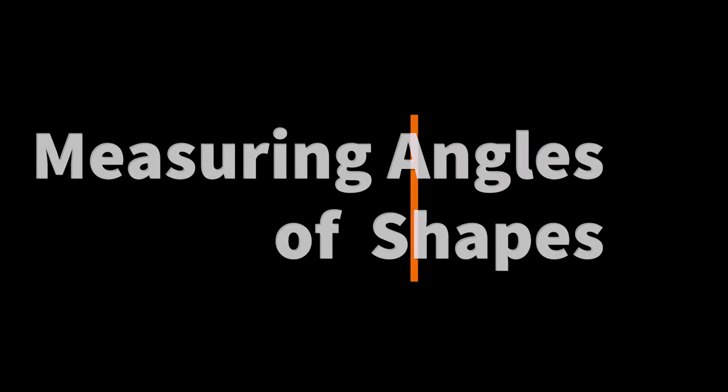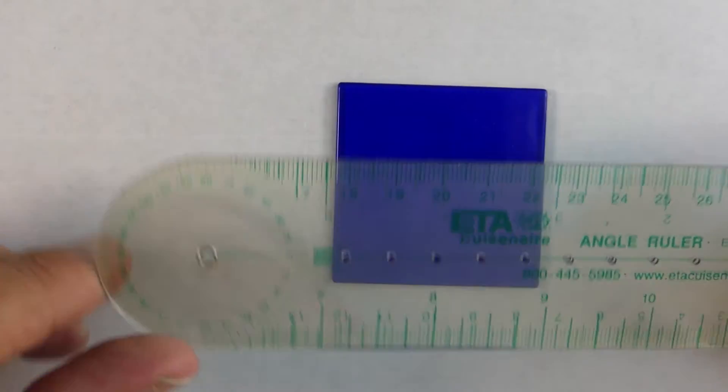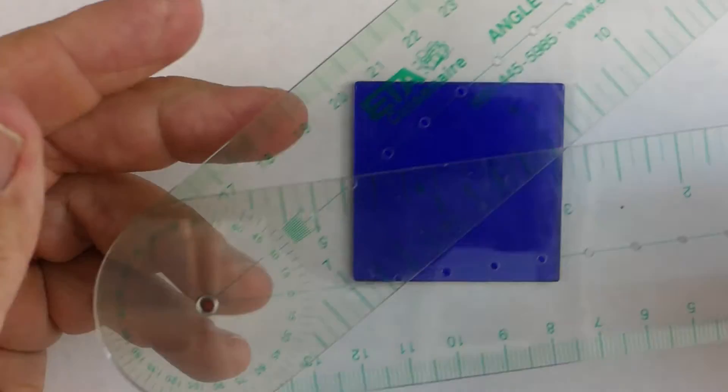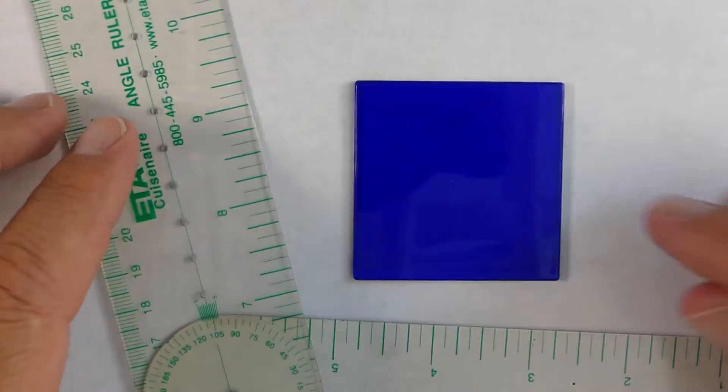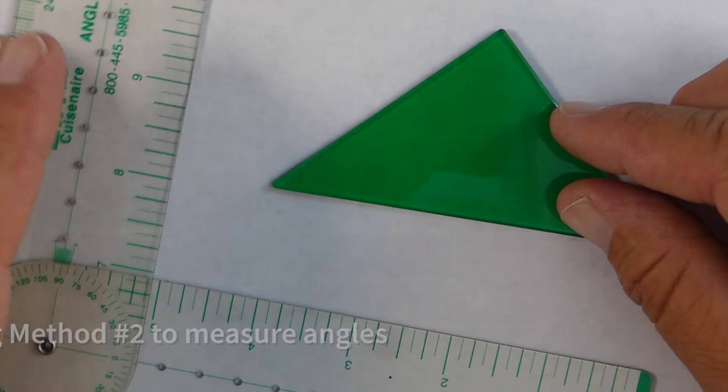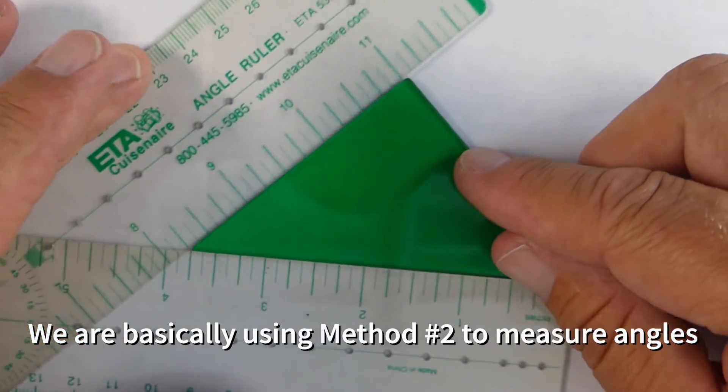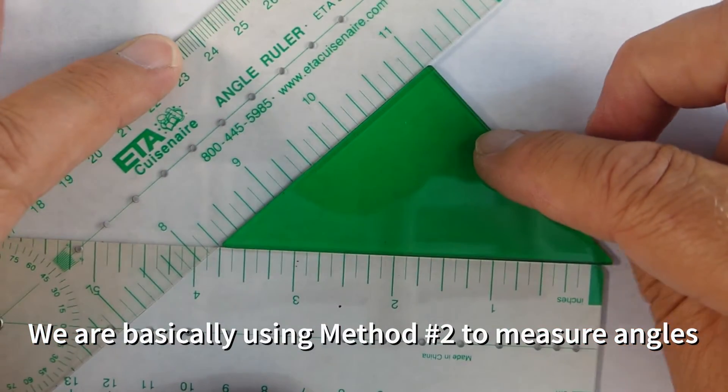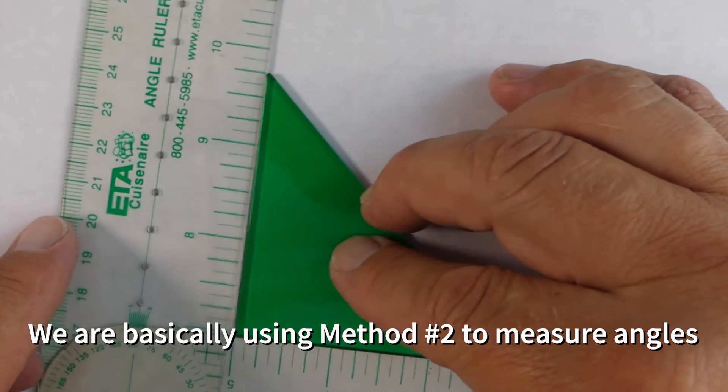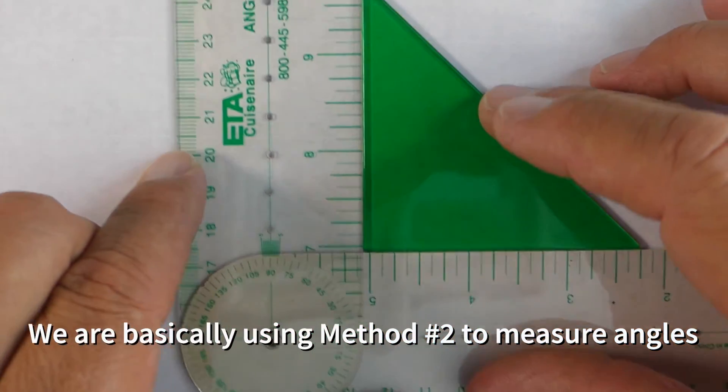One of the big advantages of using the angle ruler is how easy it is to measure two and three dimensional objects. So all you have to do, and this is kind of like method two, is you just take your geometric shape, and you just conform the angle ruler to whatever this shape is, and you can find how many degrees it is. So for example, this is a 90 degree angle here.